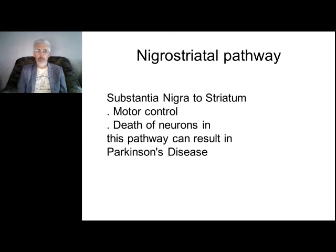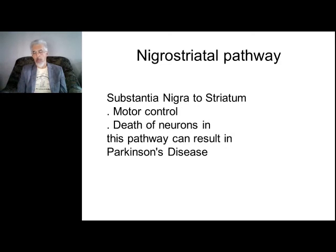The nigrostriatal pathway goes from the substantia nigra to the striatum and controls motor activity. Death of neurons in this pathway leads to Parkinson's disease. Decreasing neuron activity in this area produces Parkinsonian syndromes when drugs that decrease dopamine levels are used, because current drugs influence not only the target mesolimbic and mesocortical pathways but also cells in the nigrostriatal pathway.